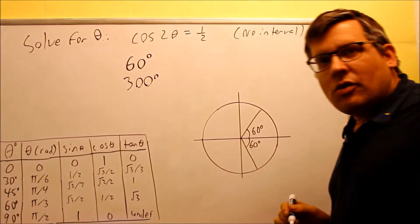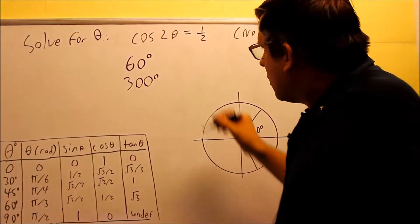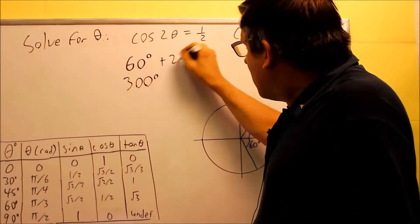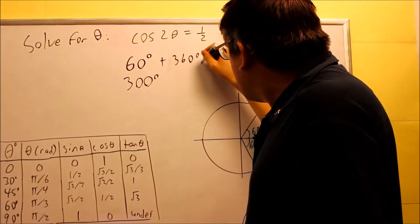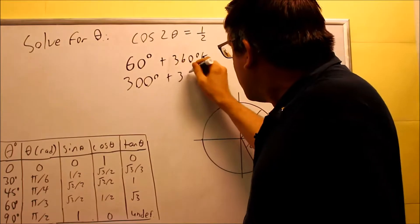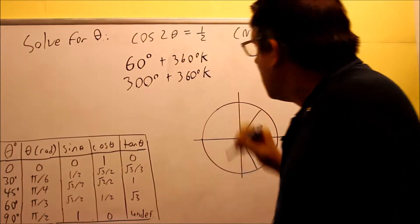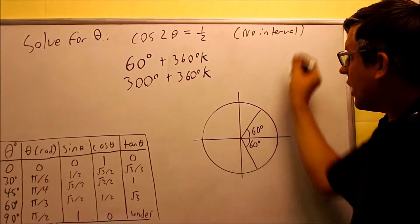Okay, now remember, for these, we need to add the, instead of 2πk, we're going to add 360 because we're dealing with degrees here. So I need to add 360k to each one because, again, I have no interval.